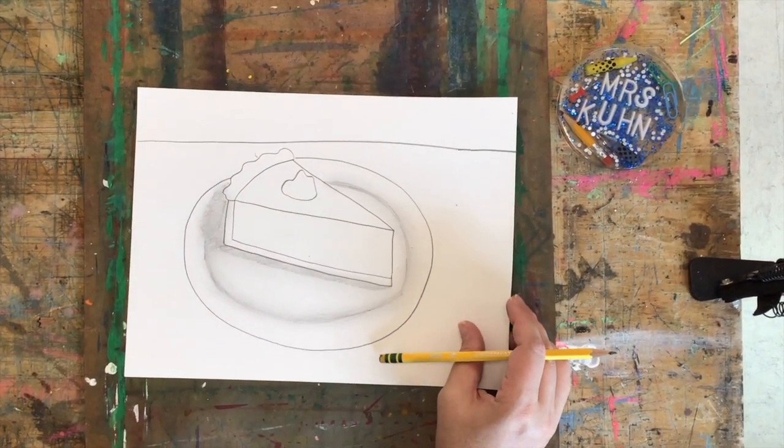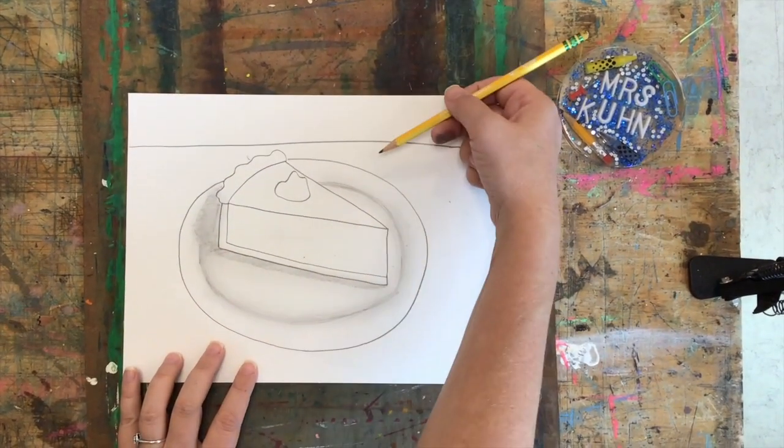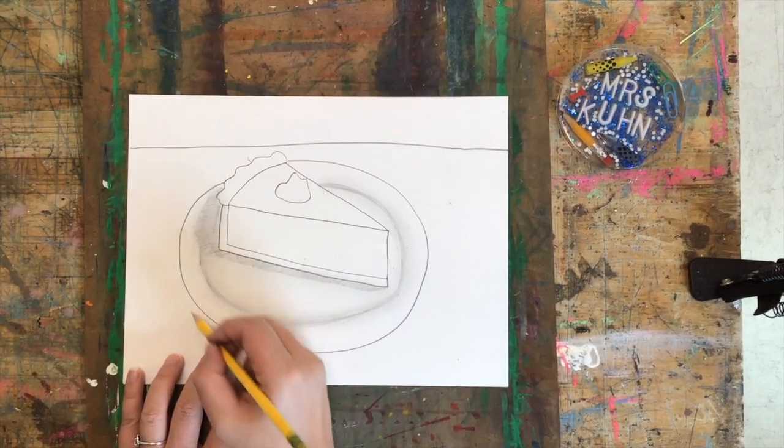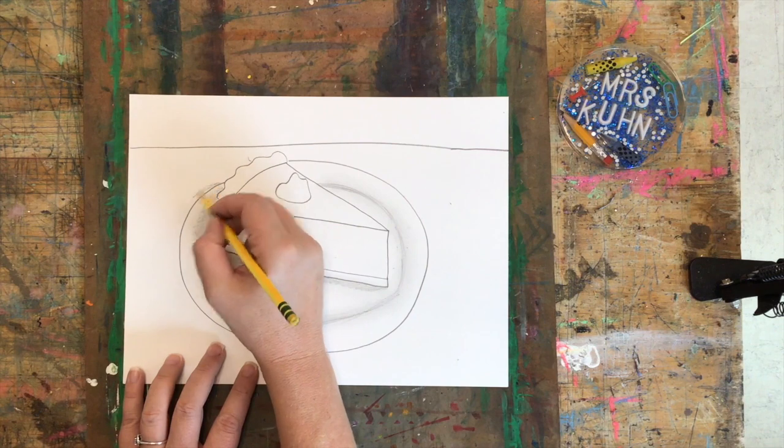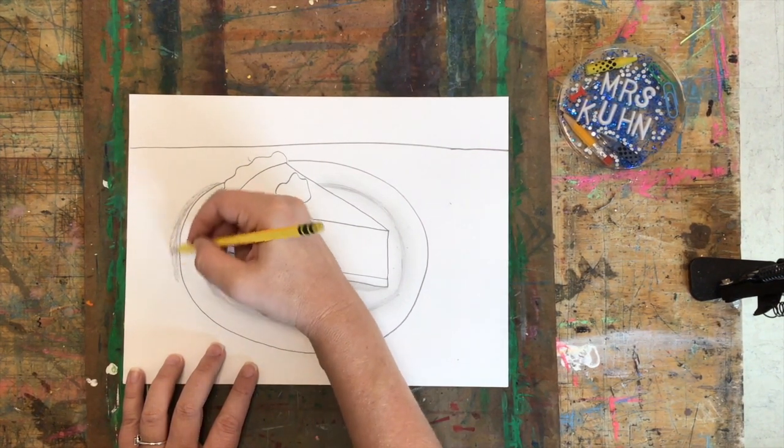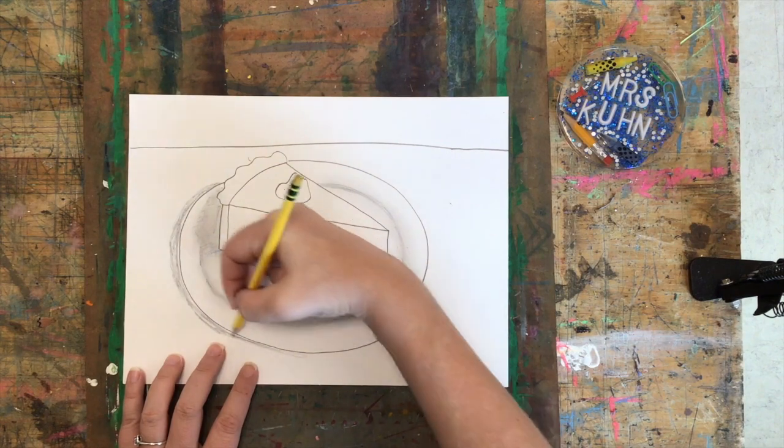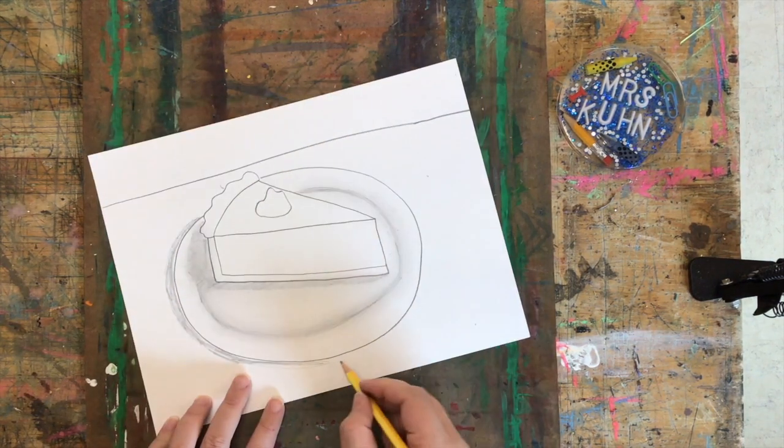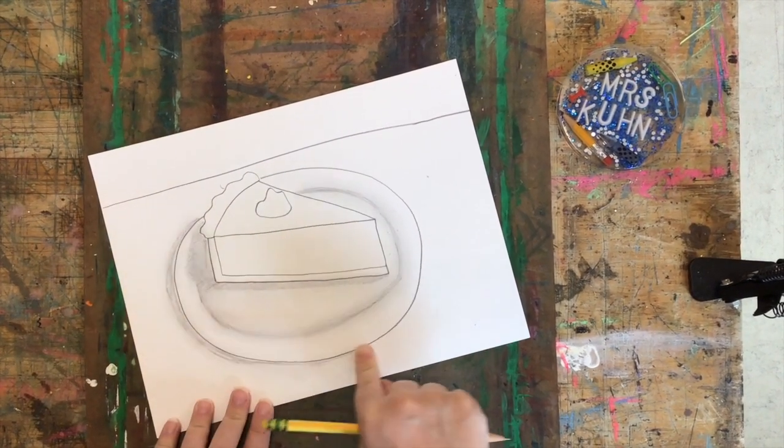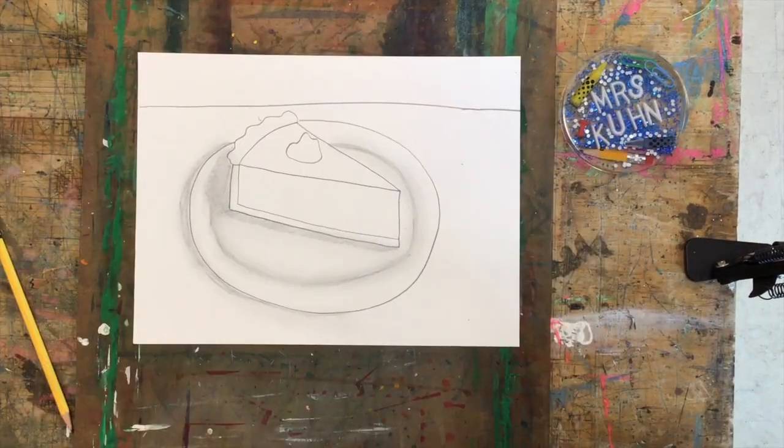Okay. And now I want to add a little bit of a shadow on the table. So if my shadow on my pie is coming to the front, then the shadow from the plate would kind of come to this under part and a little towards the back. So I'm going to come to my table. I'm going to do a little bit of a shadow. I'm going to blend it with my finger. There we go.